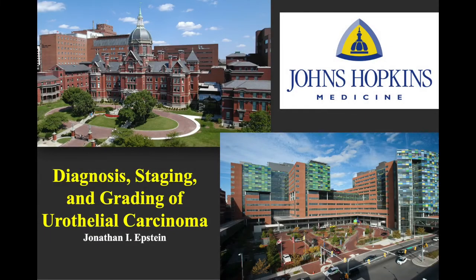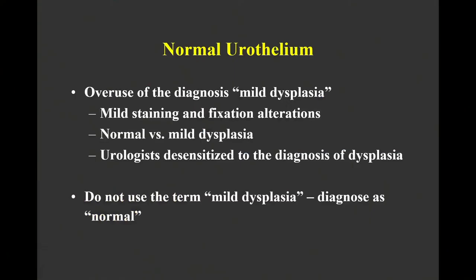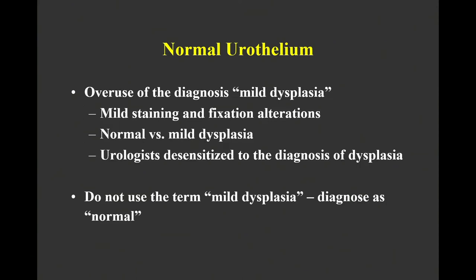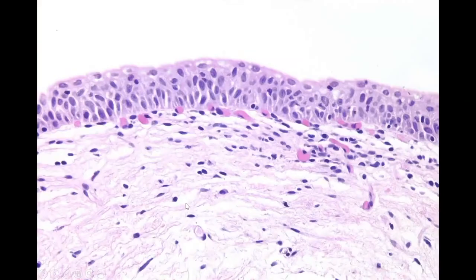This is going to be the bread and butter of urothelial carcinoma and assessing the bladder in general. In terms of normal urothelium, don't use the term mild dysplasia at all in your bladder biopsies. Any mild staining or fixation alterations can cause something to look like mild dysplasia. The distinction of normal versus mild dysplasia is extremely subjective and impossible to tell. If you use mild dysplasia with any frequency, clinicians will be desensitized when you truly have something dysplastic. So if you're thinking of calling something mild dysplasia, just call it normal.